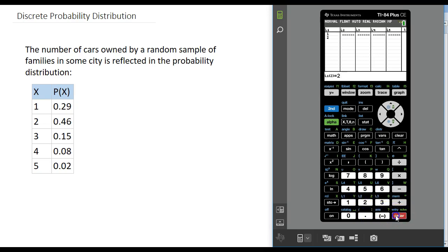I'm going to type in one, two, three, four, and five in the first column, and then in the second column, 0.29, 0.46, 0.15, 0.08, and 0.02.